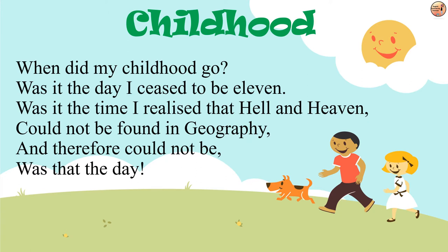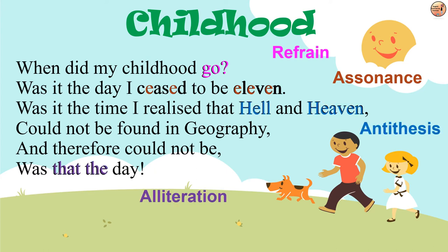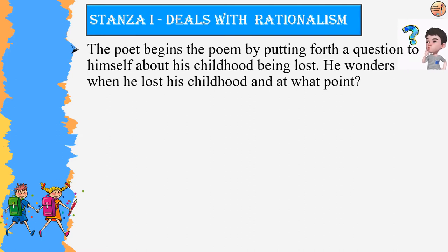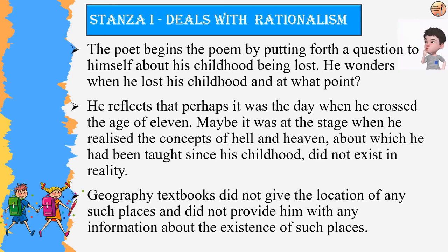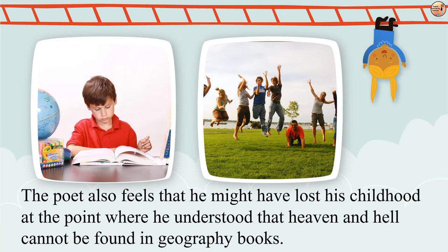Poetic devices play a very important role in any poem. In the first stanza, we have refrain, assonance, antithesis and alliteration. The poet begins by questioning when he lost his childhood. He reflects that perhaps it was the day when he crossed the age of eleven, or when he realized that the concepts of hell and heaven — taught since childhood — did not exist in reality, as geography textbooks gave no location for such places.